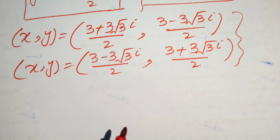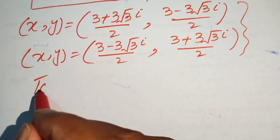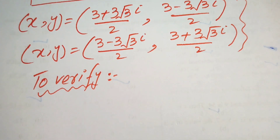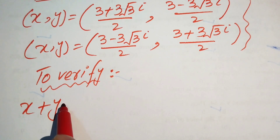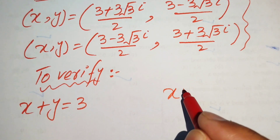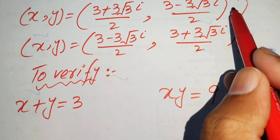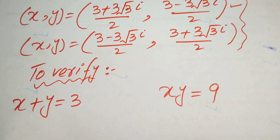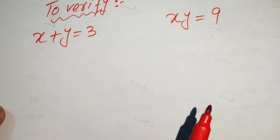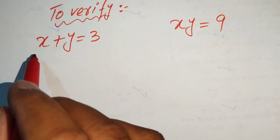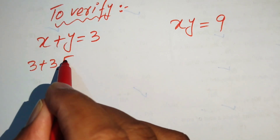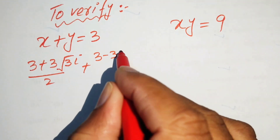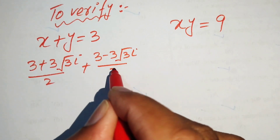Now we verify these two solutions by substituting back into the original equations. We verify the first solution. For the first equation x plus y equals 3: substituting x equals (3 plus 3 root 3 iota) divided by 2 and y equals (3 minus 3 root 3 iota) divided by 2.